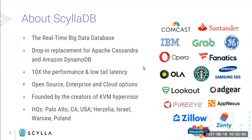ScyllaDB is the company behind Scylla the database. Scylla is a high-performance big data database compatible with Apache Cassandra at the CQL level, and compatible with Amazon DynamoDB at the API level. By compatible, I mean compatibility at the binary protocol level, so any driver that works with Cassandra or DynamoDB will work out of the box with Scylla as well.